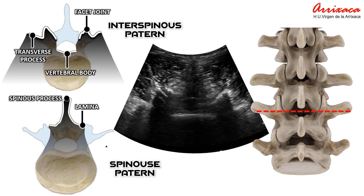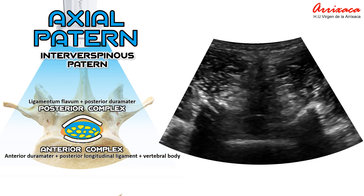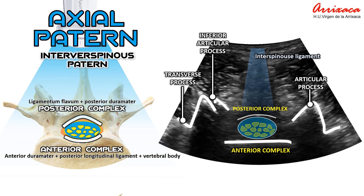The interspinous pattern is the most relevant pattern in a sagittal axis. It allows us to identify the posterior complex established by the ligamentum flavum and the dura mater, and the anterior complex established by the dura mater, posterior longitudinal ligament, and vertebral body, as well as the facet joint and transverse process.